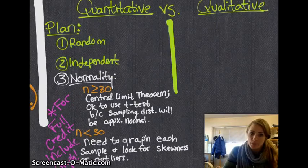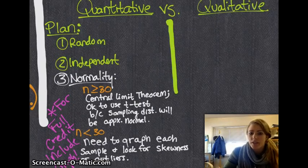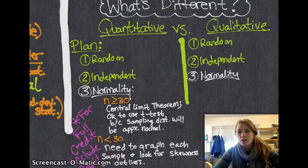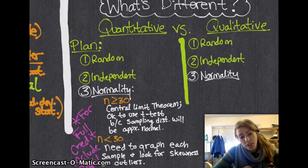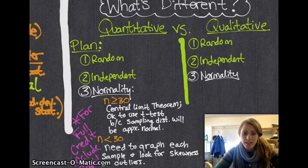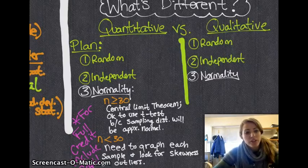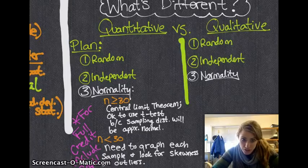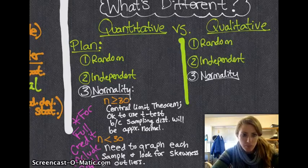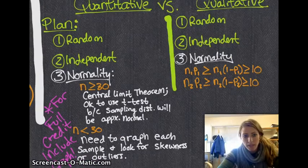If you are dealing with proportions and qualitative data, your random and independent conditions are the same. So the only thing that's different is your check for normality, which is n times p has to be greater than or equal to 10, and n times 1 minus p has to be greater than or equal to 10 for both samples. And that's all that's different in the planning stuff.